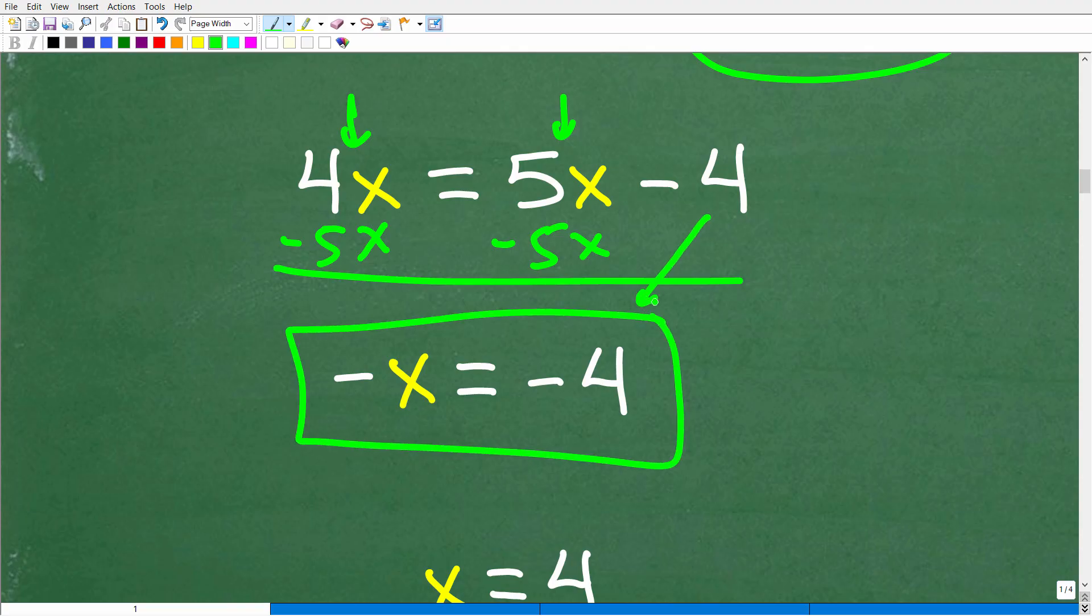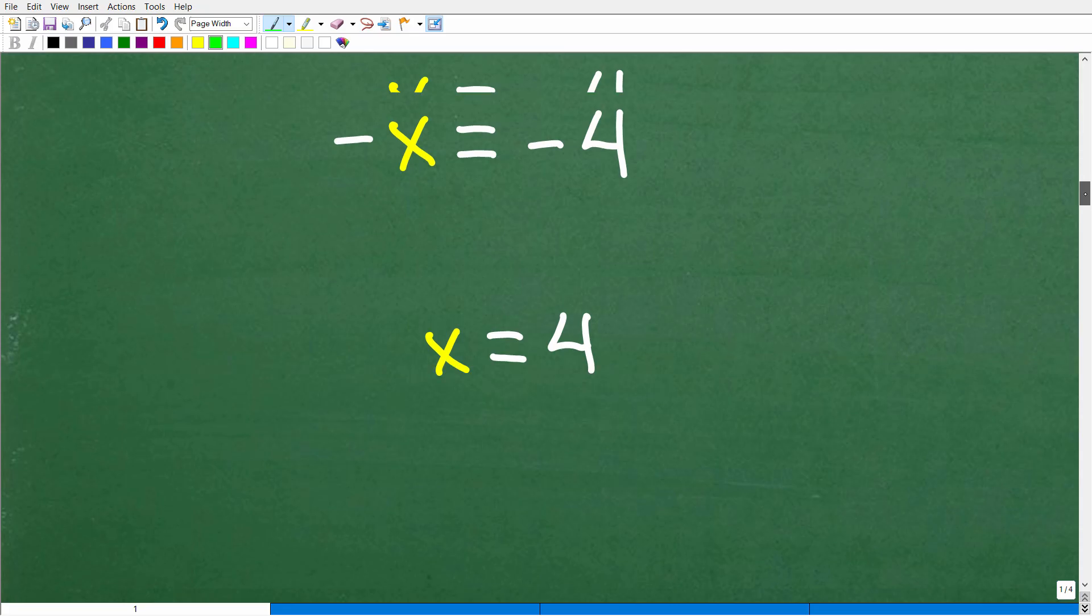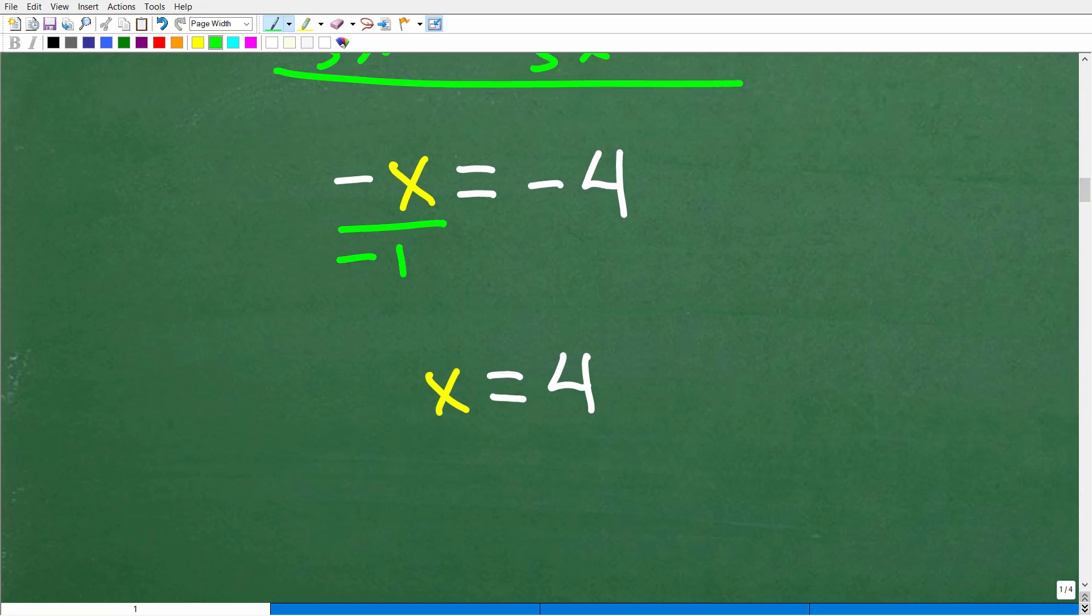It looks like we're done, but we're not done because we're solving for x, not negative x. So how do I get a positive x? Easy. All I have to do is divide both sides of the equation by negative 1. So negative x divided by negative 1 is a positive x. And negative 4 divided by negative 1 is a positive 4. So x is equal to 4.